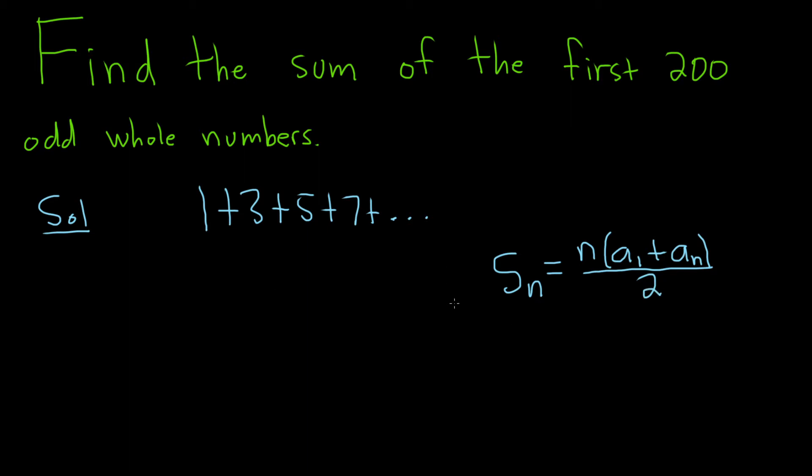So let's write down what we have for this formula. We know that n is equal to 200. We also know that the first term is 1, right, because it's here. And we just need to find the nth term, that's all we need to find.